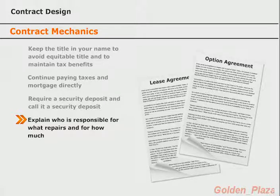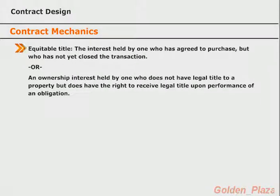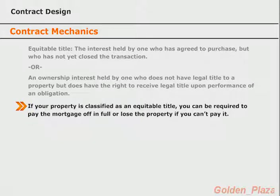There's been quite a bit of talk about equitable title and things that can be done to avoid it — but what is it really? Equitable title is the interest held by one who has agreed to purchase but has not yet closed the transaction, or an ownership interest held by one who does not have legal title to a property but has the right to receive legal title upon performance of an obligation. Essentially, equitable title means that a seller is offering ownership of a property without the title transferring to the buyer until an obligation is fulfilled. Mortgages and equitable titles are very similar, and if you're not careful, your lease option can be viewed as a transfer of equitable title — which is bad, since it could require you to pay your underlying mortgage in full or lose ownership of the property.